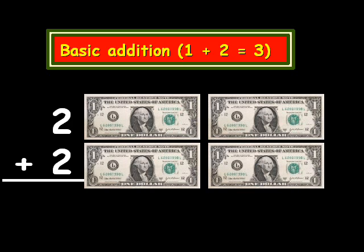So now we have $1, 2, 3, 4 in our wallet if we break it down into units that way. So 2 plus 2 is 4.